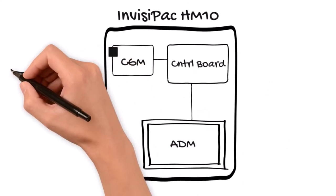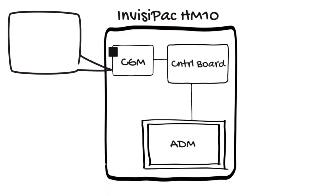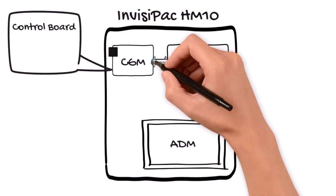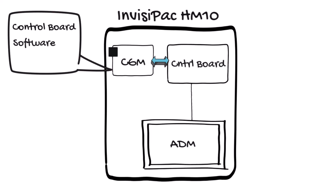The CGM is Graco's main communication device. It communicates with the control board, runs equipment software, and communicates with the ADM.